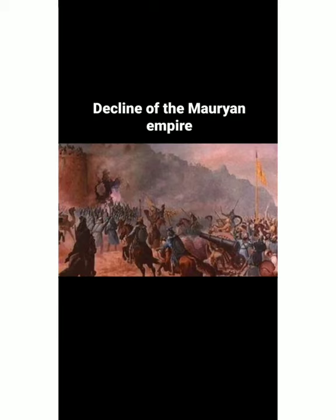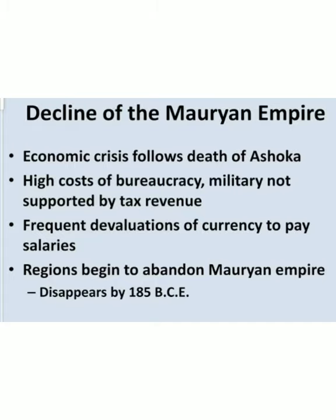Now we will discuss about the decline of the Mauryan empire. What was the reason because of which the Mauryan empire collapsed? The empire existed for about 50 years and after that it declined. There are four reasons. After the death of Ashoka, there was no strong successor. All the successors were very weak, and the economic condition after the death of Ashoka declined.